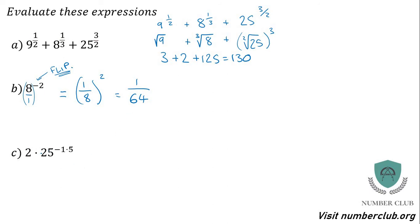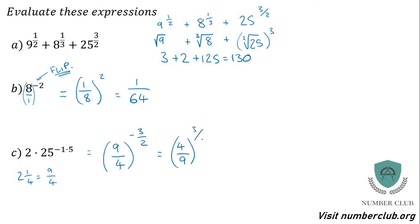Next: 2.25 raised to the power of negative 1.5. This is awkward because of the decimals — it's difficult to spot what can be square rooted or cube rooted. So convert everything to improper fractions, not mixed numbers. 2.25 is 9 over 4, raised to the power of negative 3 over 2. Use the negative to flip the fraction — get 4 over 9 raised to the power of 3 over 2. Square root each and then cube: square root of 4 is 2, 2 cubed is 8; square root of 9 is 3, 3 cubed is 27. So we get 8 over 27.